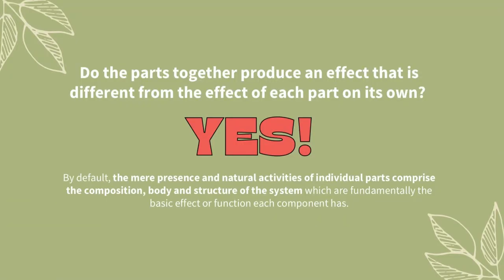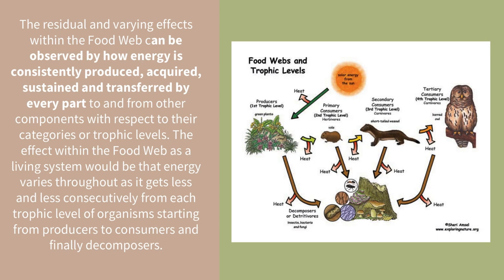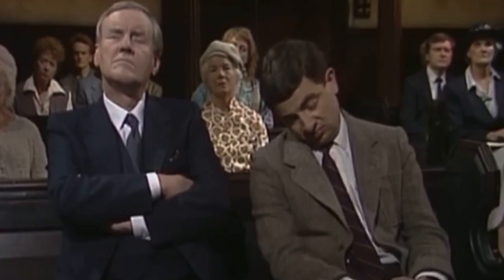Do the parts, together, produce an effect that is different from the effect of each part on its own? Yes. The mere presence and natural activities of individual parts comprise the composition, body, and structure of the system, which are fundamentally the basic effect or function each component has. The effect within the food web as a living system would be that energy varies throughout, as it gets less and less consecutively from each trophic level of organisms, starting from producers to consumers and finally decomposers.